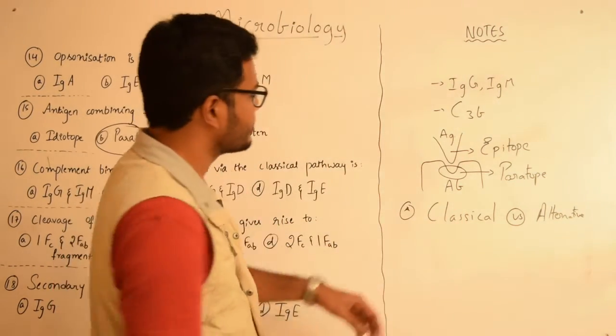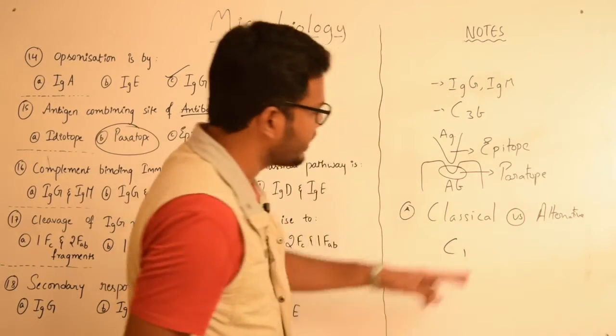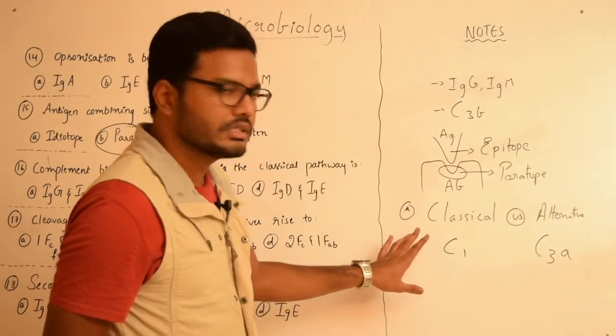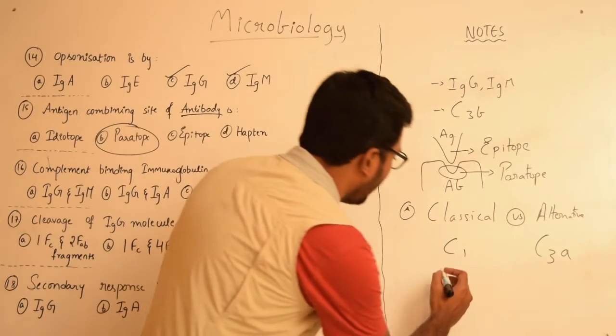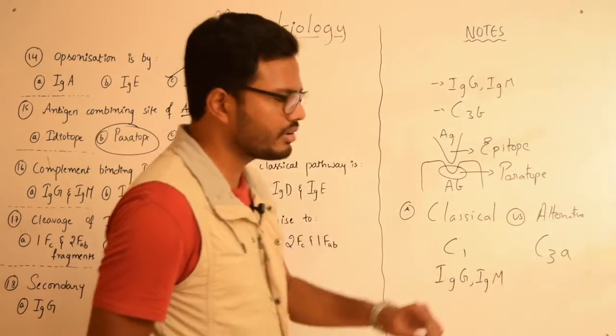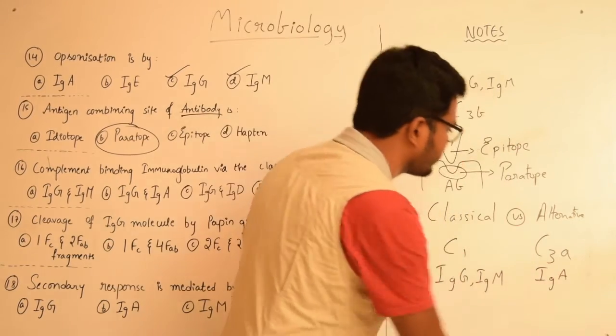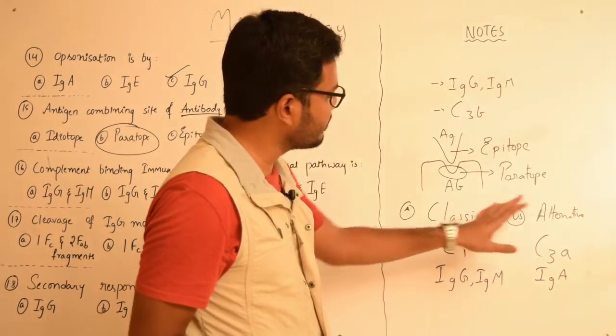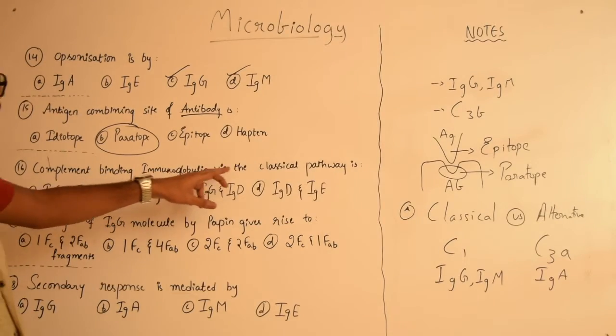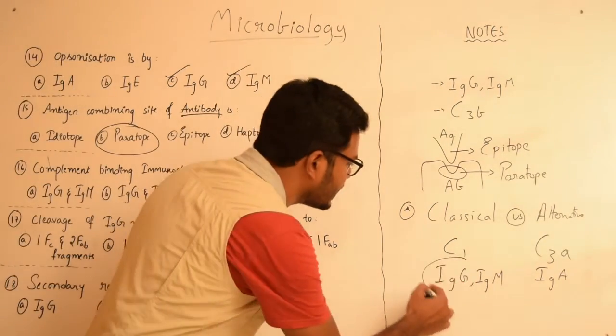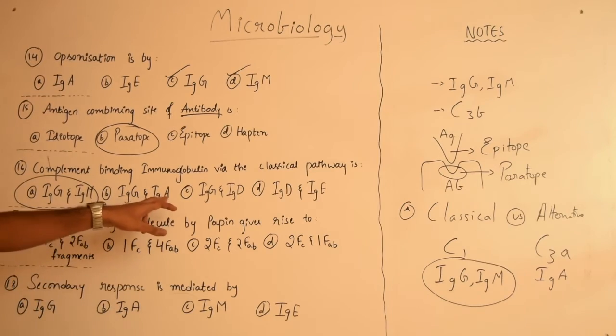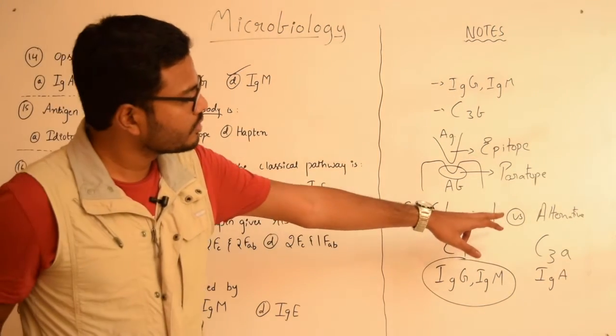This classical pathway of complement system is activated at C1 whereas alternative pathway is activated at C3A. The antibodies which are initiating this classical pathway are IgG and IgM, whereas the antibodies initiating the alternative pathway is IgA. So coming to the question, the complement binding immunoglobulin via the classical pathway is IgG and IgM, whereas IgA is associated with stimulating the alternative pathway at C3A site.